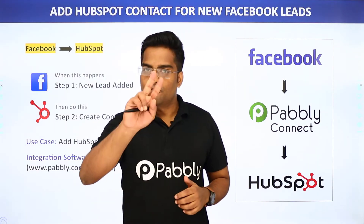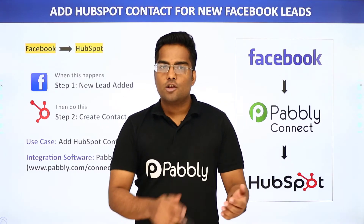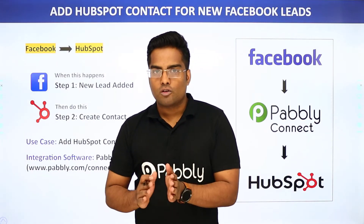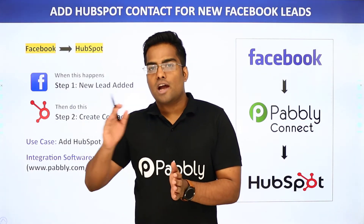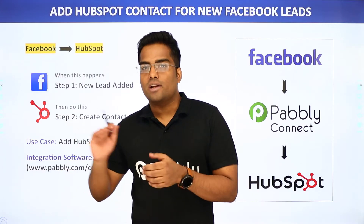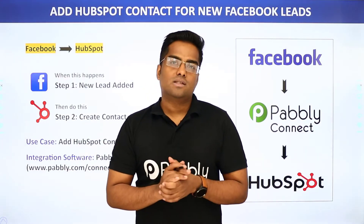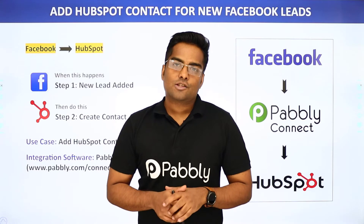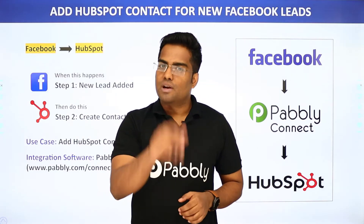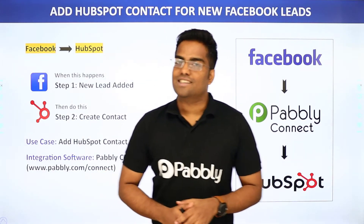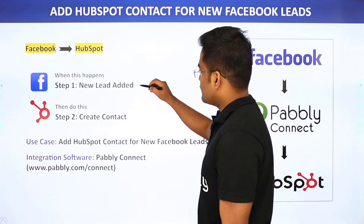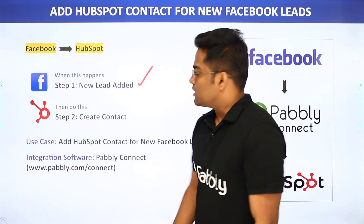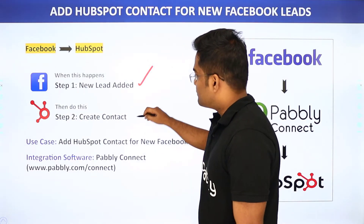So here you have two choices. The first choice is you copy all the details from Facebook forms, sort it out, and manually add John as a contact in HubSpot. This process is actually very repetitive and tiresome. So I would suggest that you bring in some automation — when a new lead is added in Facebook, it will automatically create a contact in HubSpot.